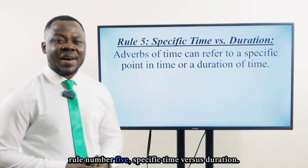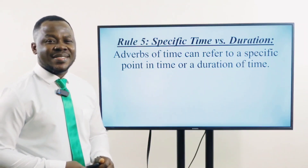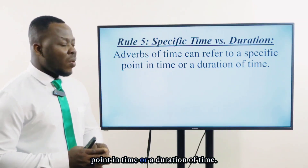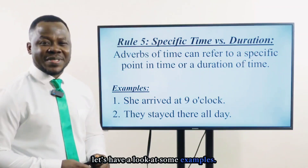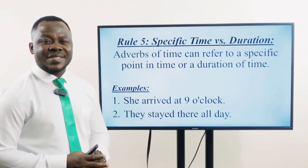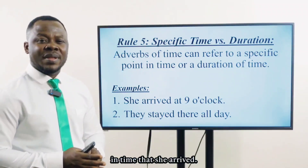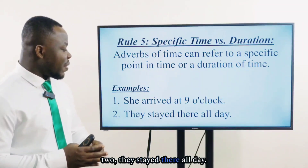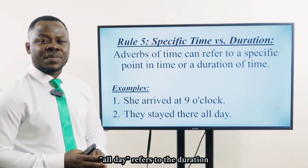Rule number 5: Specific time versus duration. Adverbs of time can refer to a specific point in time or a duration of time. For example: She arrived at nine o'clock — nine o'clock indicates the specific point in time that she arrived. They stayed there all day — all day refers to the duration of time that they stayed there.